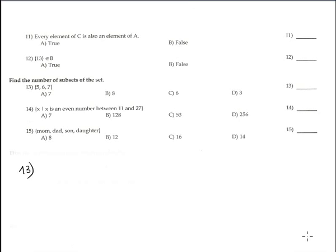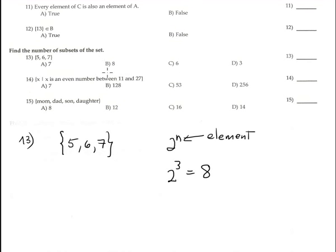Find number 13: find the number of subsets of the set. In this case, we have 3 elements: 5, 6, and 7. Remember the formula: the formula for finding the number of subsets is 2 to the n, where n represents the number of elements or the cardinality of the set. So it's 2 to the 3rd power is 8. We have 8 elements. The answer is 8 that corresponds with option B.